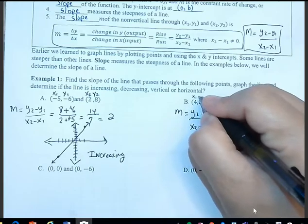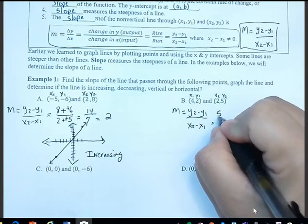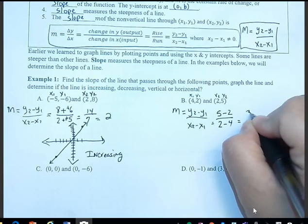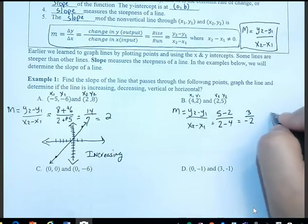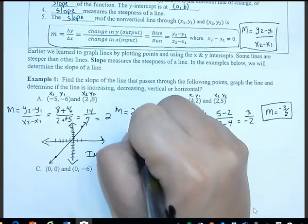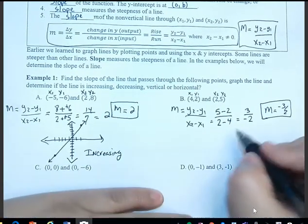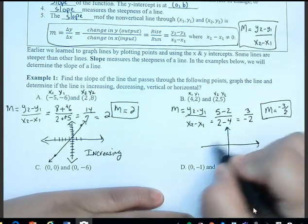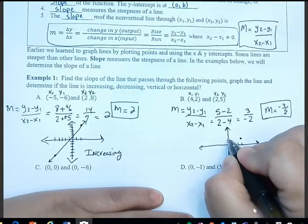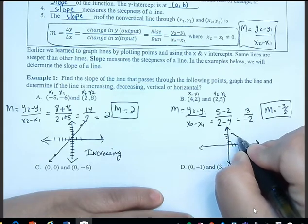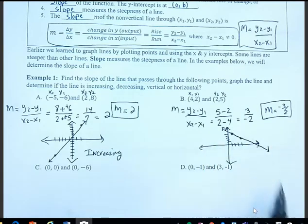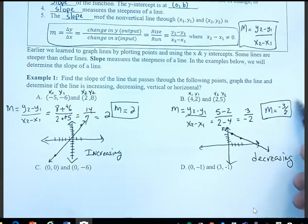For part b, let's plug in these numbers. y₂ is 5, minus y₁ which is 2, divided by x₂ which is 2, minus x₁ which is 4. 5 minus 2 is 3, and 2 minus 4 is negative 2. So my slope is negative 3 halves. Plotting the points — (4, 2) and (2, 5) — from left to right you can see the line is decreasing, and notice that the slope is negative.